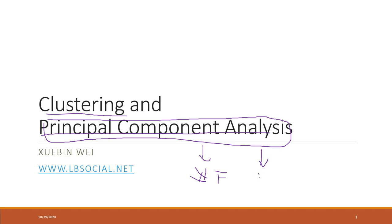PCA is also great if you want to visualize a high-dimensional dataset. Since we can only visualize two or three dimensions at a time, if we have, say, 500 features or 500 dimensions, we can visualize that data after applying principal component analysis.